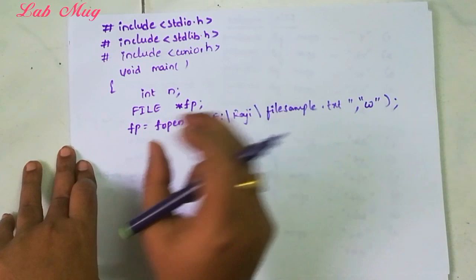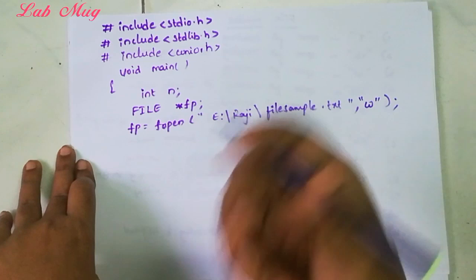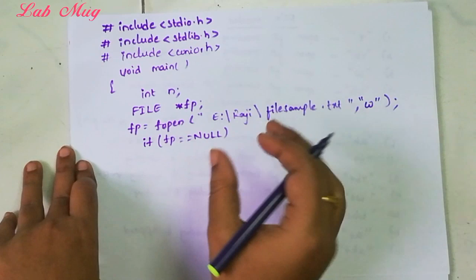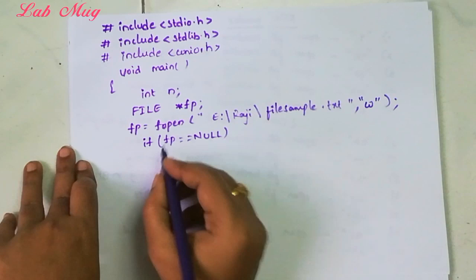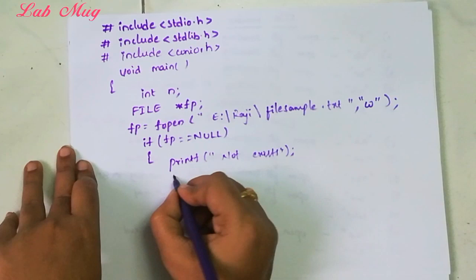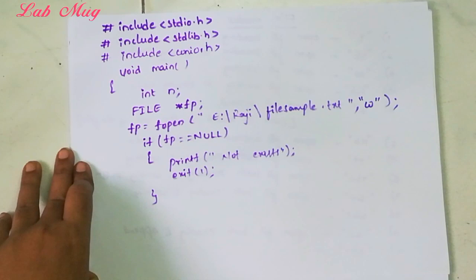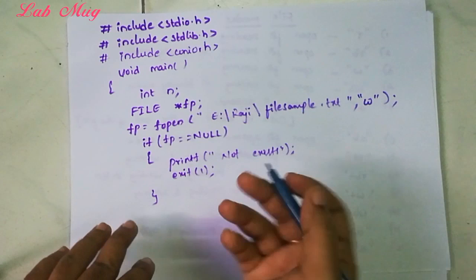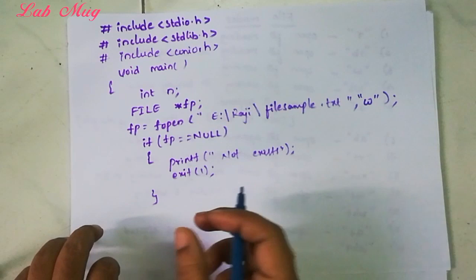Next, in fp we opened the file and stored the file address in fp. If by chance the file is not there, we need to take that option also. If fp equal to equal to null - that means if the file address is not there, there's no file at that address. If there's no file, that means null. If it's null, we just pass information to the user. That is printf not exist. Next, exit of 1. We'll exit directly using the exit function - we mention exit of 1.